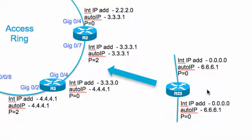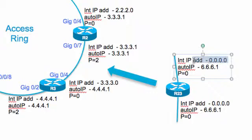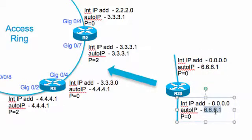Now we are going to do a node insertion and see how you don't have to change any configuration on the existing nodes. I'm going to take R2.3 and configure its interfaces with auto IP. The configuration has two interfaces — it doesn't matter which ones — you simply configure auto IP on those interfaces. Initially, since the working IP address is null on both interfaces, both will have a priority of 0.